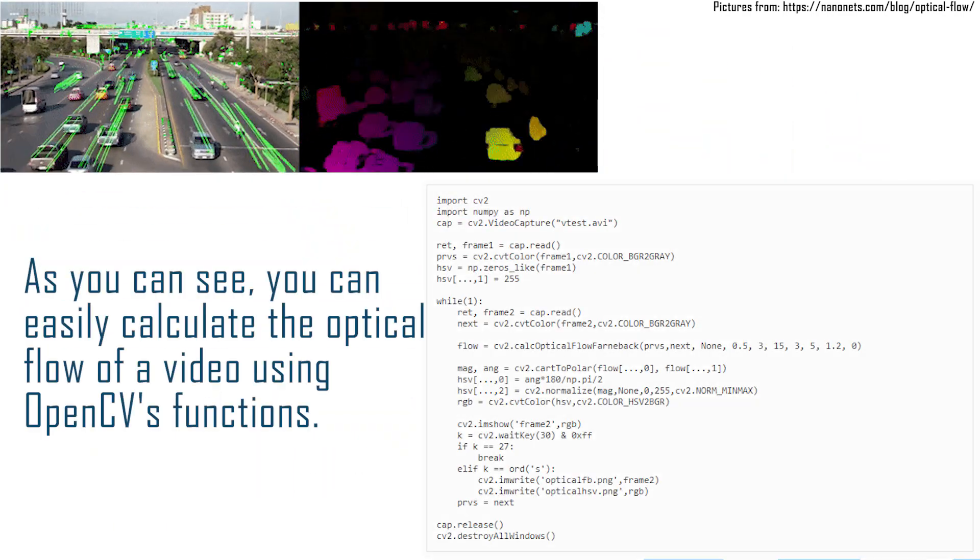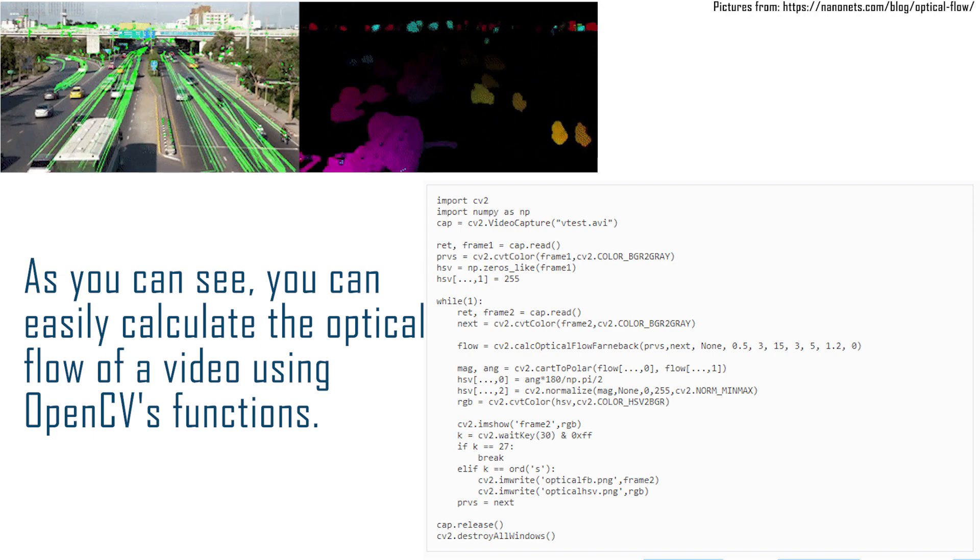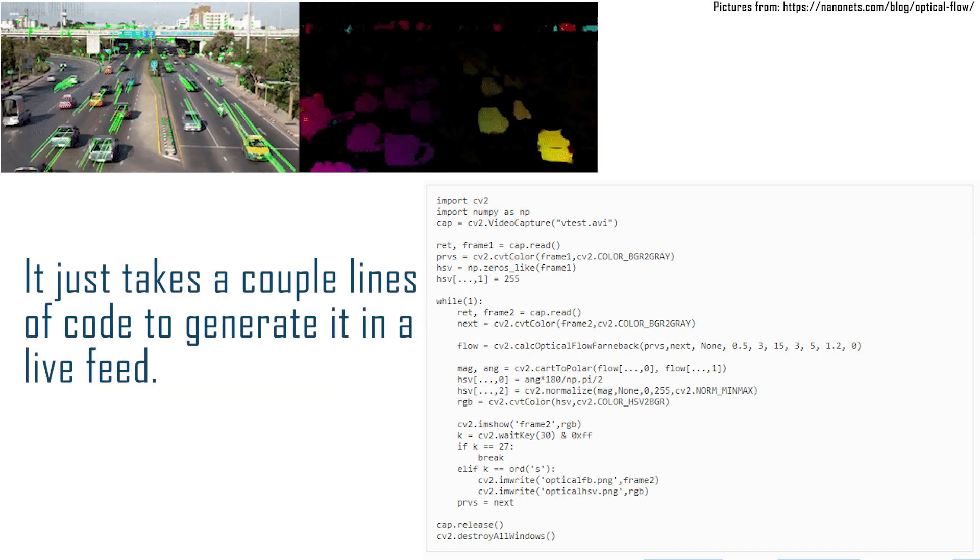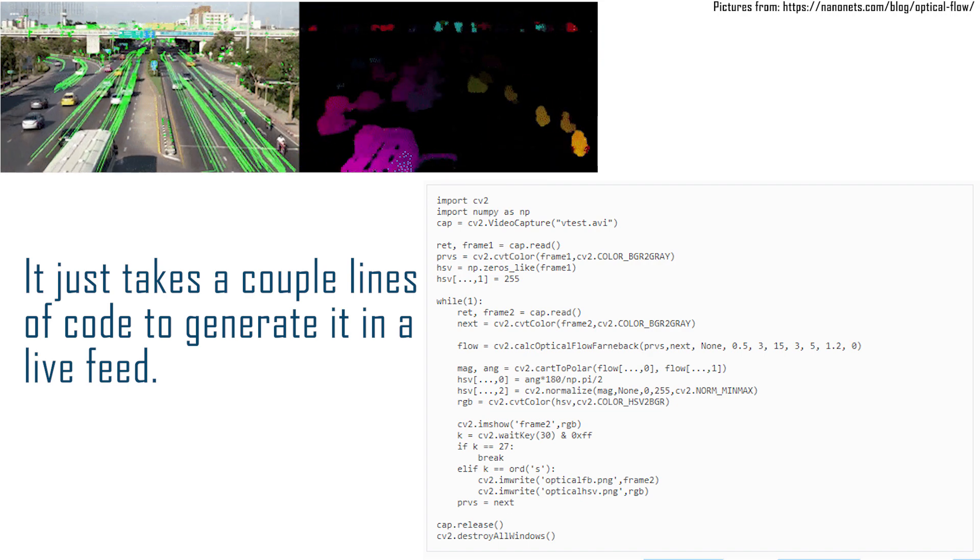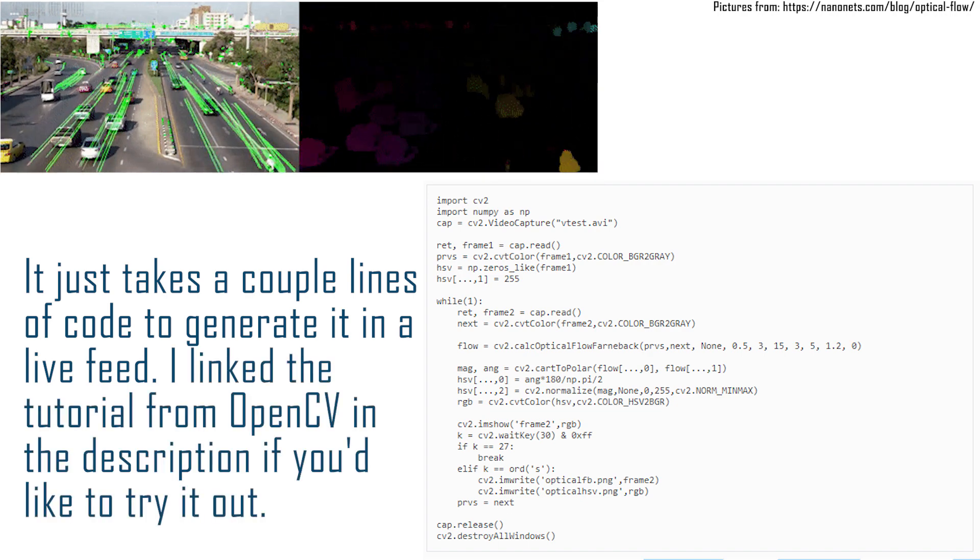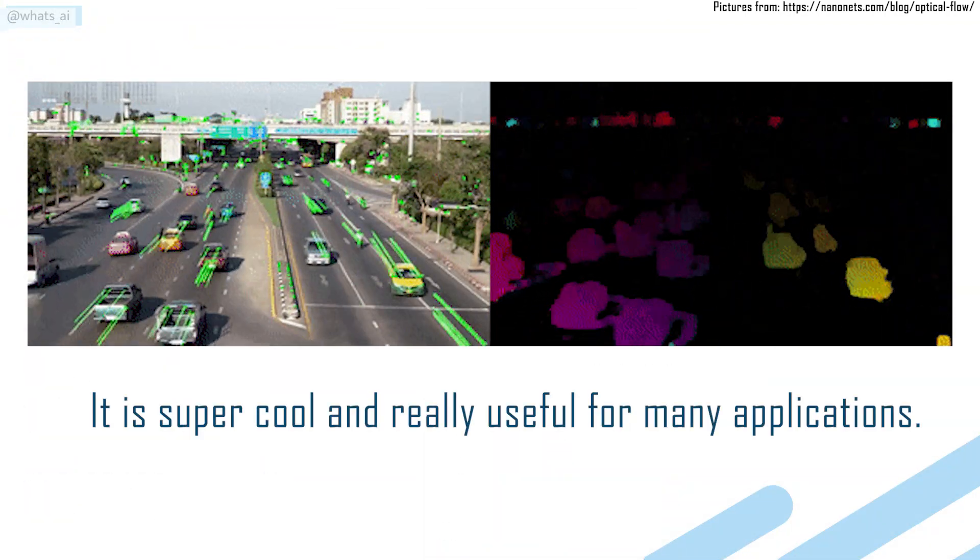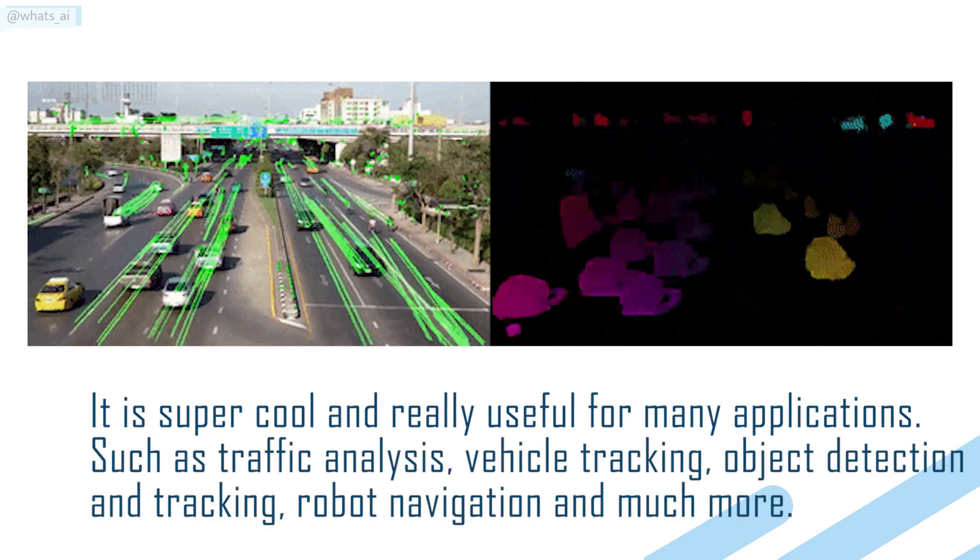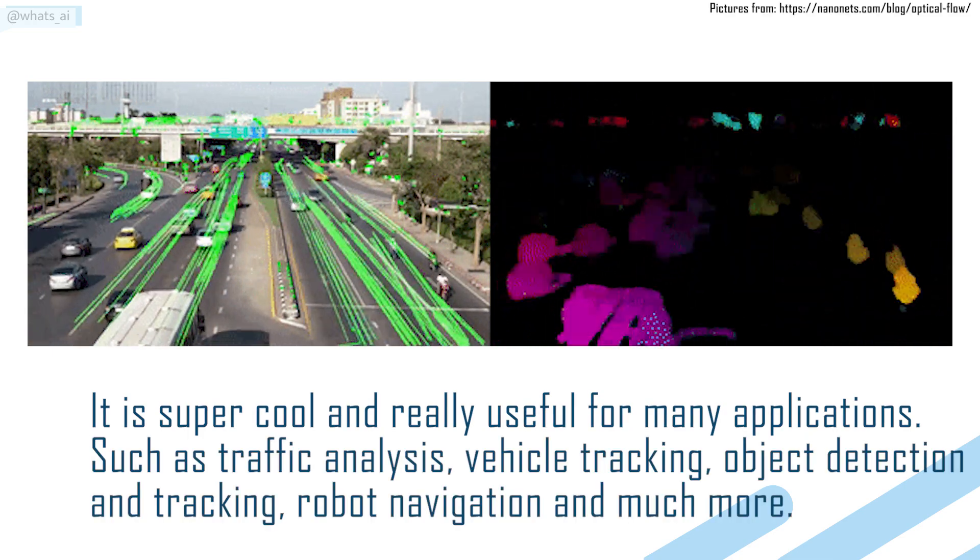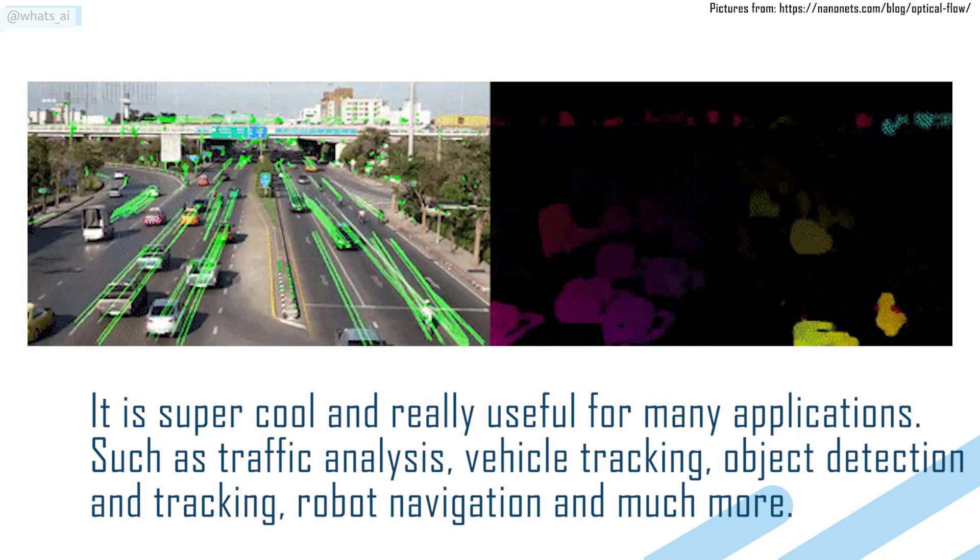As you can see, you can easily calculate the optical flow of a video using OpenCV's function. It just takes a couple of lines of code to generate it in a live feed. I linked the tutorial from OpenCV in the description if you'd like to try it out. It is super cool and really useful for many applications, such as traffic analysis, vehicle tracking, object detection and tracking, robot navigation, and much more.